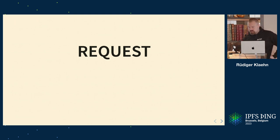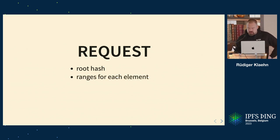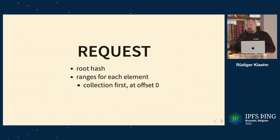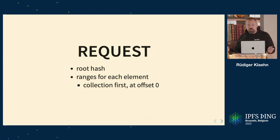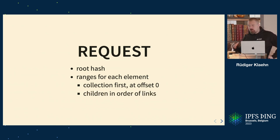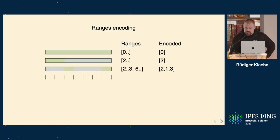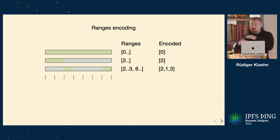So how does a request look? A request contains a root hash — it's content addressed — and then ranges for each element. The collection is just a blob, so we treat it as the first element. For the collection, just like any other block, you can specify ranges. So for a collection with a billion links, you might not want to download the entire collection. Everything is ordered as the links appear in the collection, with ranges specified for each element. There's a compact range encoding. If you want deep details, ask in the hallway or look in the repo.